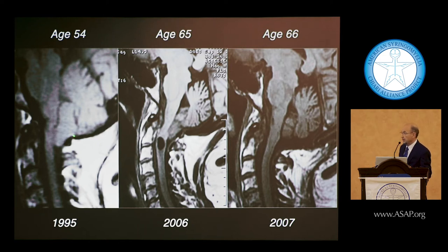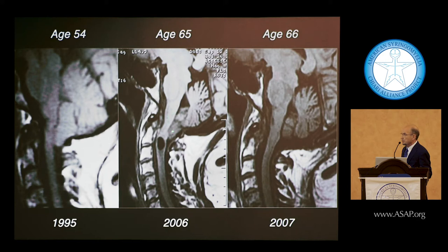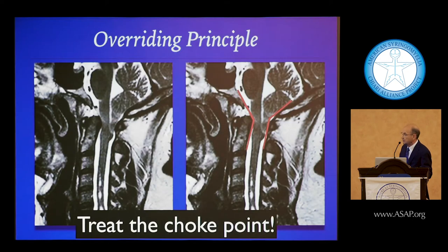She was 54 years old when she found out she had Chiari, and as a self-employed attorney she kept working for 10 years before she could no longer push through. Her scan 11 years later at age 65 showed a markedly elongated brainstem, a new syrinx, and tonsils descended four more millimeters. One year after surgery, we were able to reverse much of this abnormal pathology. Chiari changes over time.